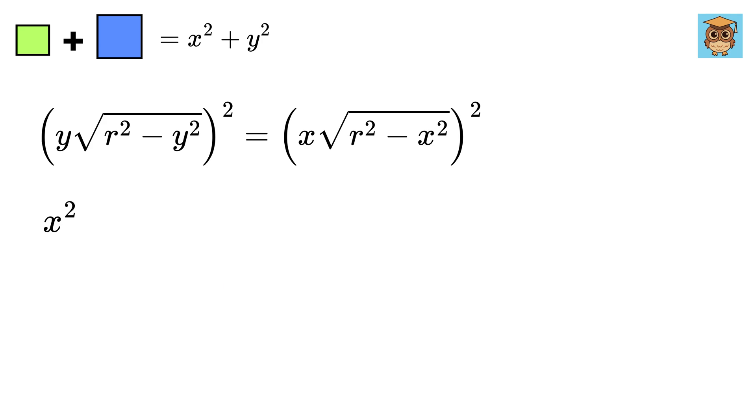Square again to get x squared times (R squared minus x squared) equals y squared times (R squared minus y squared).